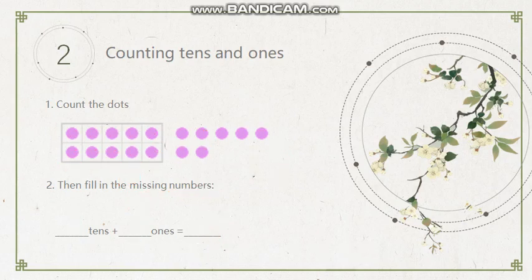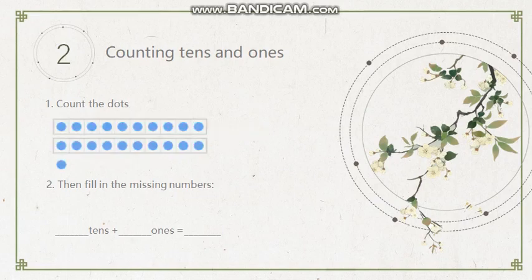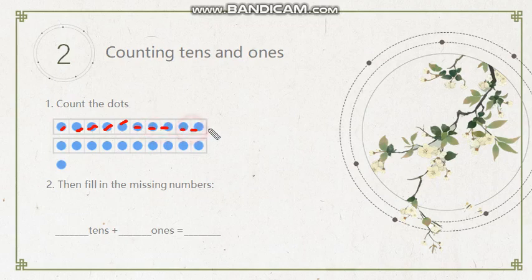In the next example is here. Count the dots. We'll do the counting again. One, two, three, four, five, six, seven, eight, nine, ten. So that's ten. And I believe here, also ten. Because it's exactly the same. And now about this one. That's a one.